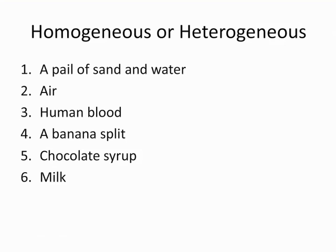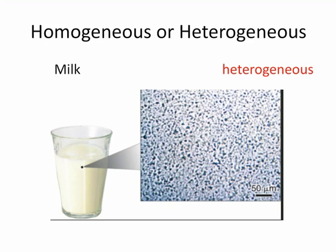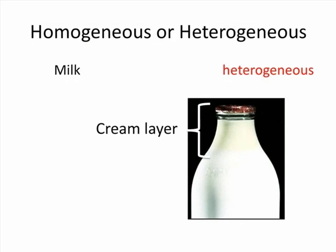Milk — homogeneous or heterogeneous? Milk looks uniform to the naked eye, but look again at milk under a microscope and you will see fat globules randomly arranged. Milk may look uniform macroscopically, but microscopically its non-uniform nature is apparent. Raw milk eventually settles, forming a cream layer at the surface. Homogeneous mixtures or solutions never settle. Milk is a special type of heterogeneous mixture called a colloid.